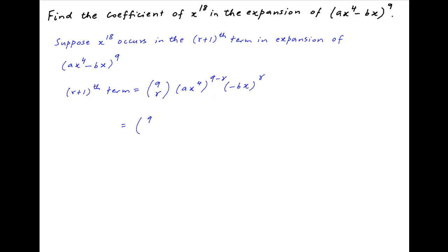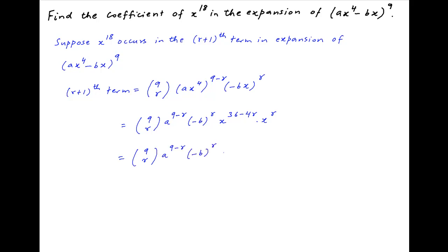This is equal to 9 choose r, multiplied by a raised to the power 9 minus r, multiplied by minus b raised to the power r, multiplied by x raised to the power 36 minus 4r, times x raised to the power r. This simplifies to 9 choose r, times a raised to the power 9 minus r, times minus b raised to the power r, times x raised to the power 36 minus 3r.